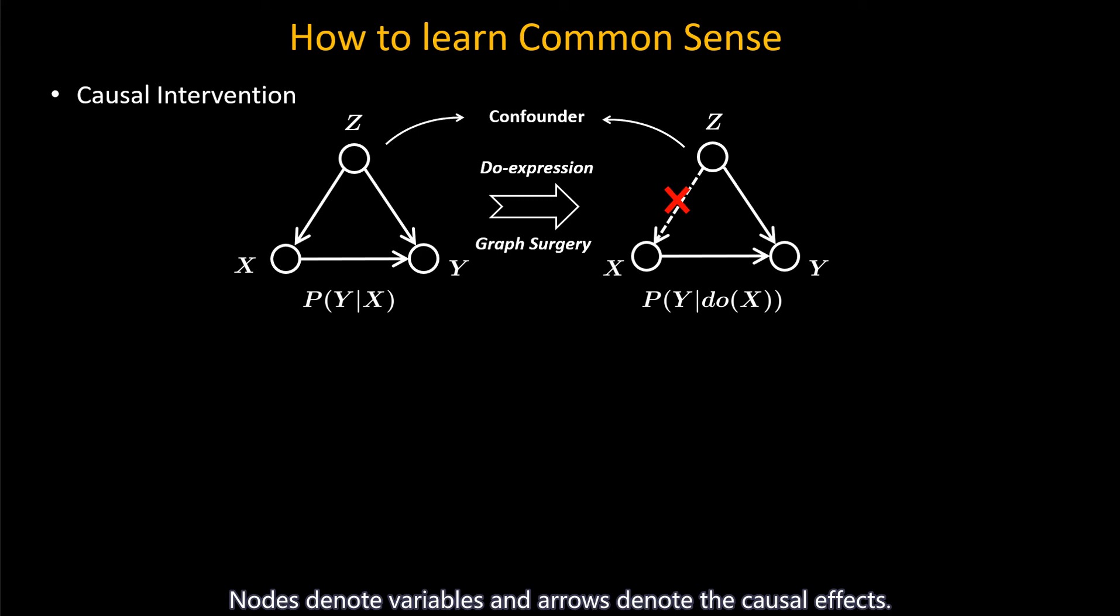The intervention can be regarded as a graph surgery that cuts off arrows from Z to X to eliminate the effect from confounders. This operation is also called do expression. The P(Y|X) becomes P(Y|do(X)).